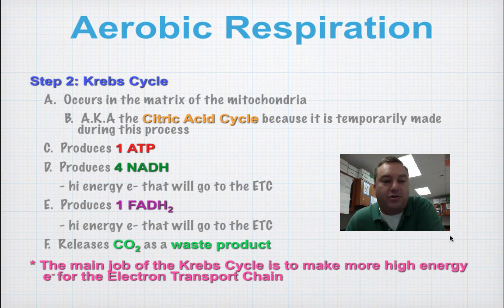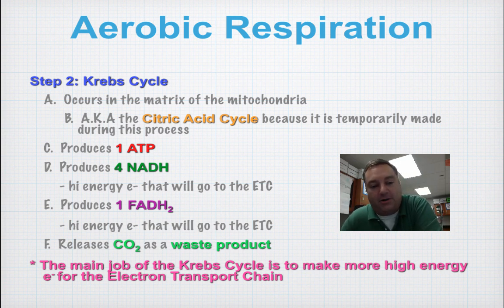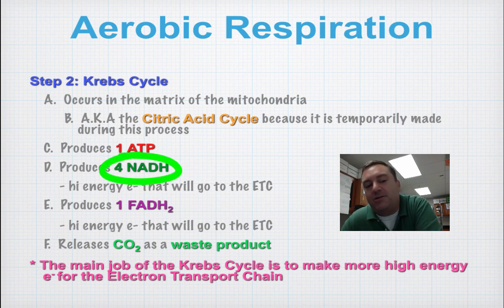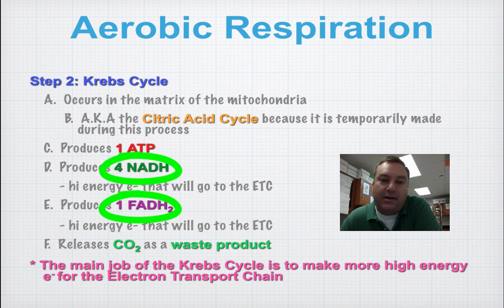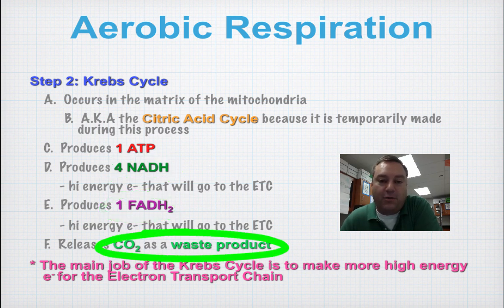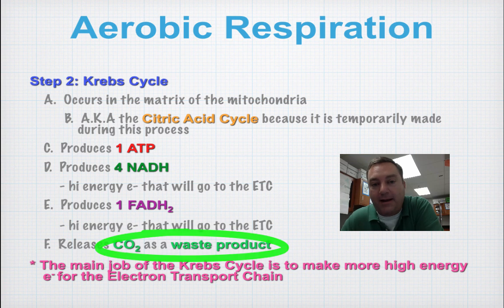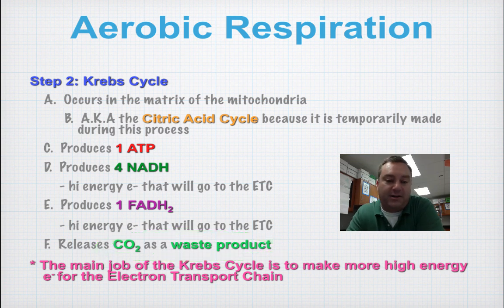The pyruvic acid moves into the mitochondria and goes through the Krebs cycle. The Krebs cycle makes one molecule of ATP, but the main thing it makes is NADH and FADH2, which both carry high-energy electrons that go to the electron transport chain. It also makes carbon dioxide, which is the waste product we breathe out. Remember, the number one job of the Krebs cycle is to make more high-energy electrons — that's the NADH and the FADH2.